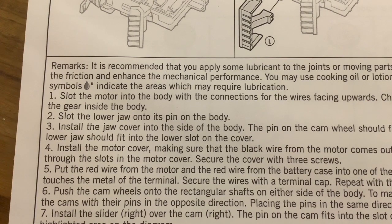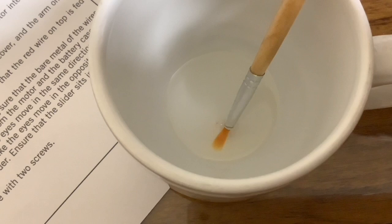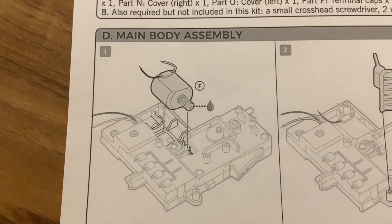It is recommended that you apply some lubricant to the joints or moving parts when assembling the product. This helps to reduce the friction and enhance the mechanical performance. You may use cooking oil or lotion for this purpose. In the instructions, the water drop symbols indicate the areas which may require lubrication. So I've put a little bit of sunflower oil in a cup with a fine paint brush.